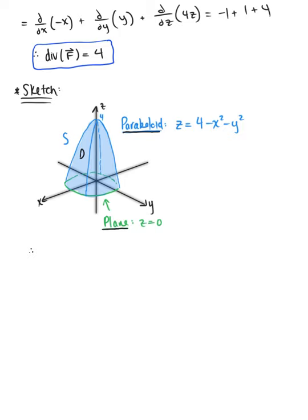Looking at our solid region D, we can see the bounds on z. The region D is bounded above by the paraboloid and below by the xy plane, so z is greater than or equal to 0 and less than or equal to 4 minus x squared minus y squared.